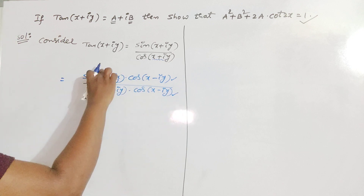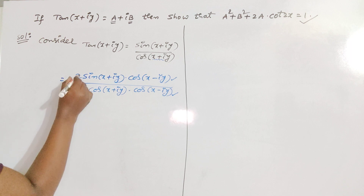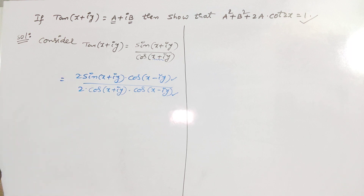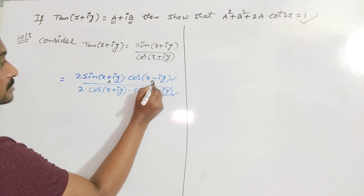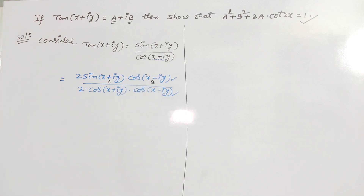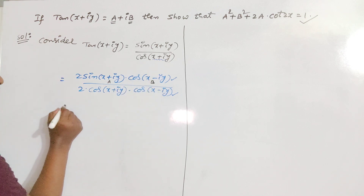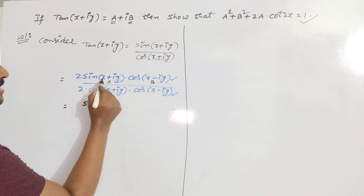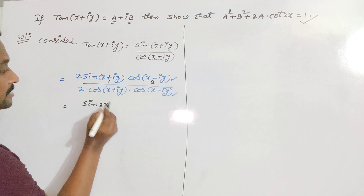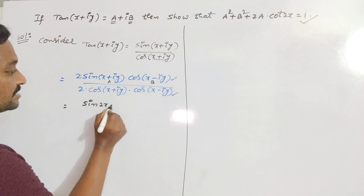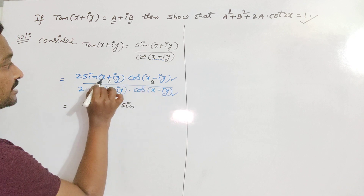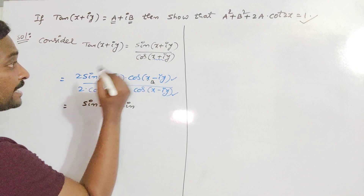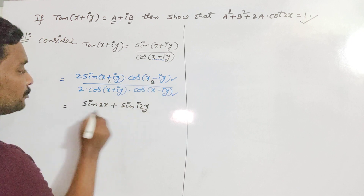These both terms get cancelled, and you will get a similar term. You can also multiply with 2 and divide with 2, for the purpose of applying trigonometric formulas. Clearly, it is in the form of 2·sinA·cosB. The formula for 2·sinA·cosB gives sin(a+b): x plus x gives 2x, and iy minus iy gets cancelled. Plus, for the subtraction: x minus x cancels, and iy minus (−iy) gives i·2y.